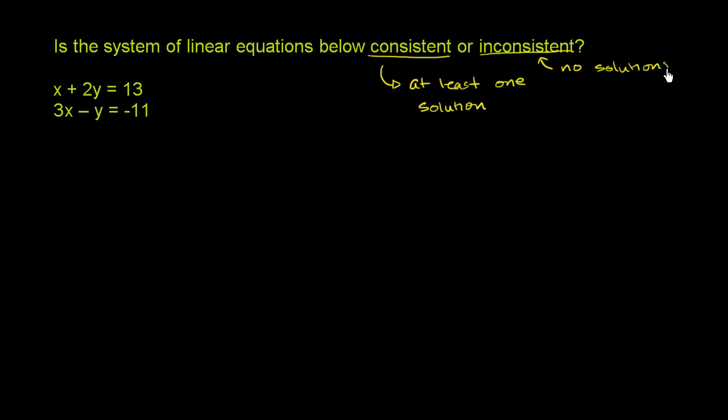So if we think about it graphically, what would the graph of a consistent system look like? Let me just draw a really rough graph. So that's my x-axis, and that is my y-axis. If I have just two different lines that intersect, that would be consistent. So that's one line, and then that's another line. They clearly have that one solution where they both intersect. So that would be a consistent system.